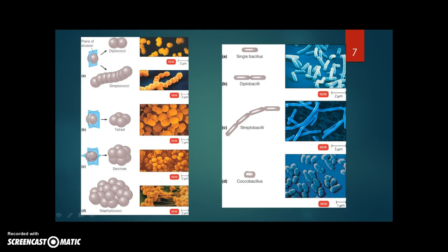Bacteria can be classified according to their shape. There are three basic shapes: spherical, rod-shaped and spiral. Spiral-shaped bacteria can be further categorized depending in part on how much spiraling they show.